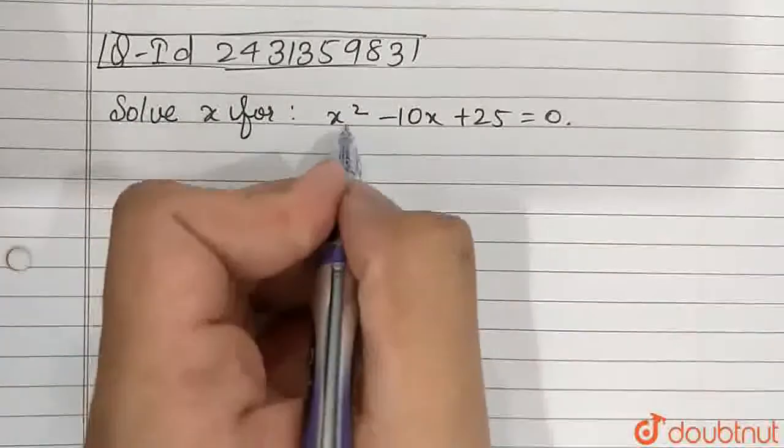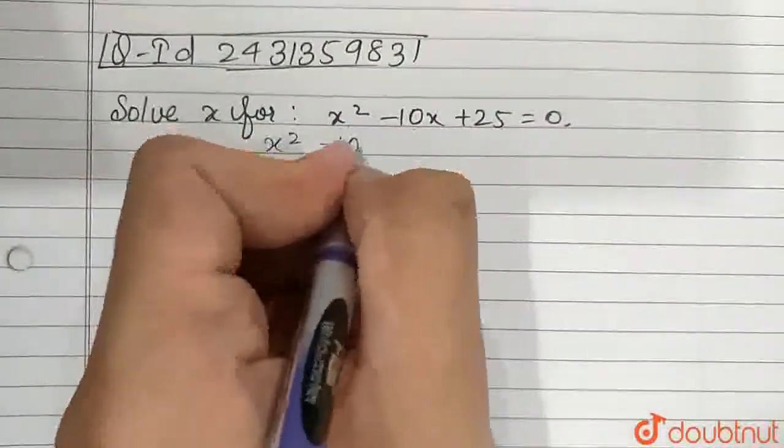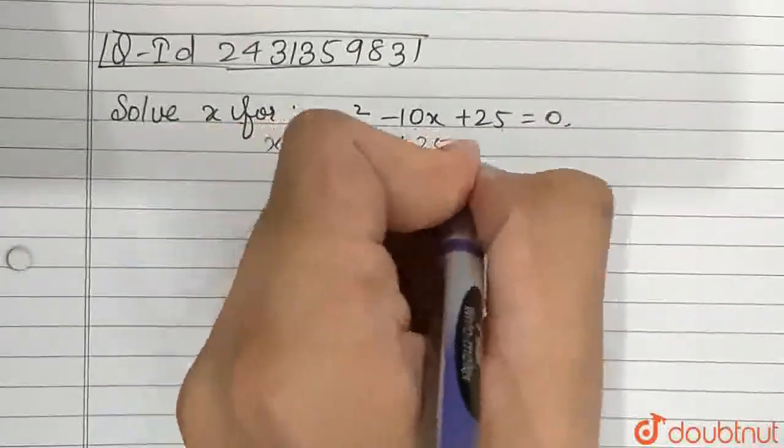Solve for x: x² - 10x + 25 = 0. Now we have to factorize it.